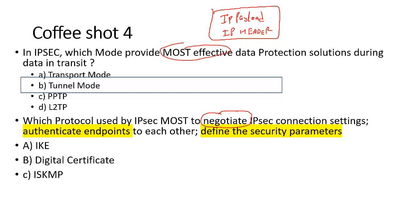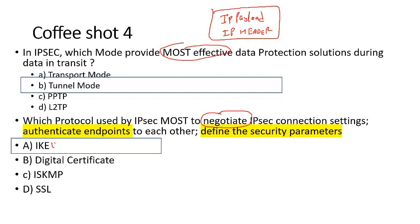Options are: IKE, digital certificate, ISAKMP, and SSL. ISAKMP is a part of IKE because ISAKMP provides the framework. Digital certificates are an external solution from a trusted third party. SSL is used for encryption. The answer is IKE because IKE is the protocol used by IPSec to negotiate connection settings, authenticate endpoints to each other, define security parameters, negotiate session keys, and manage, update, and delete IPSec protocols for the communication channel. The current version is IKEv2.